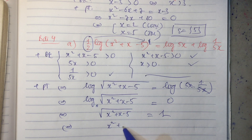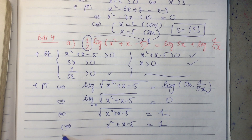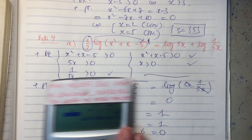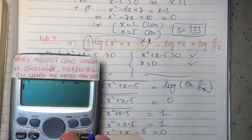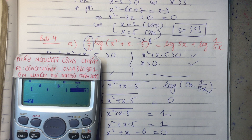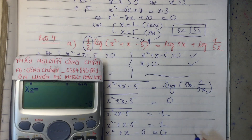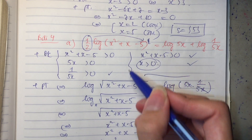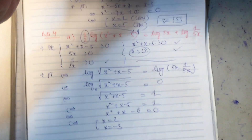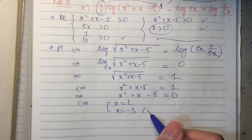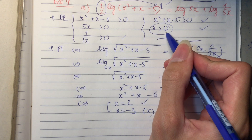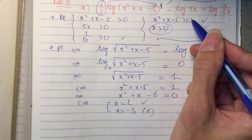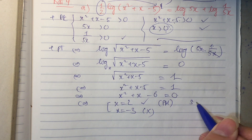Ta thu được x bình phương cộng x trừ 6 bằng 0. Bấm máy tính với hệ số 1, 1, âm 6 thì ra 2 nghiệm là 2 và âm 3. Để thỏa mãn x dương thì âm 3 bị loại rồi. Cái 2 này ngoài dương còn thỏa mãn, thay thử lên: 4 cộng 2 là 6, 6 trừ 5 là 1, dương thật, thỏa mãn. Vậy bên này chỉ có 1 nghiệm duy nhất là 2.